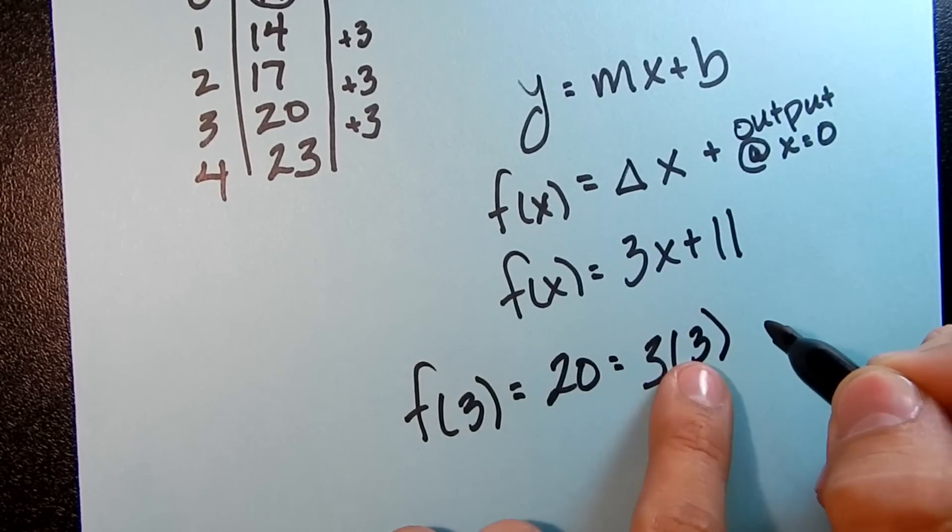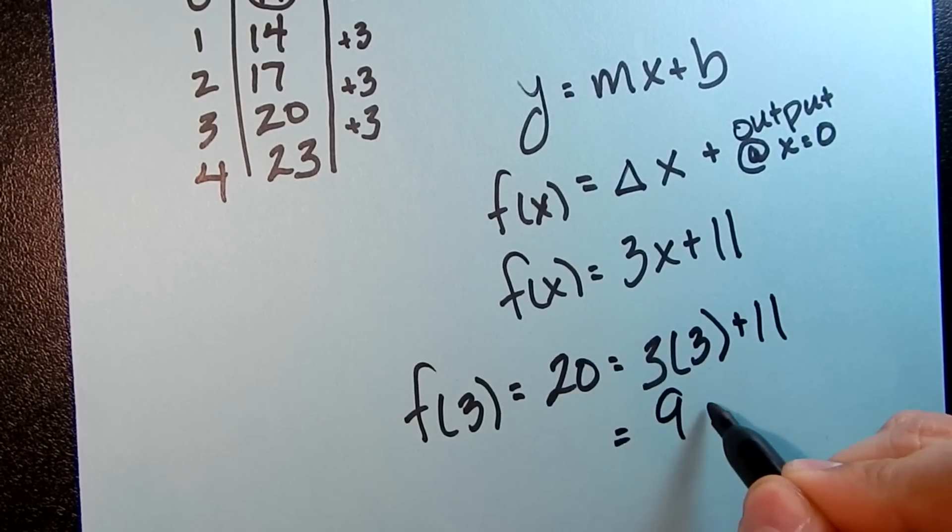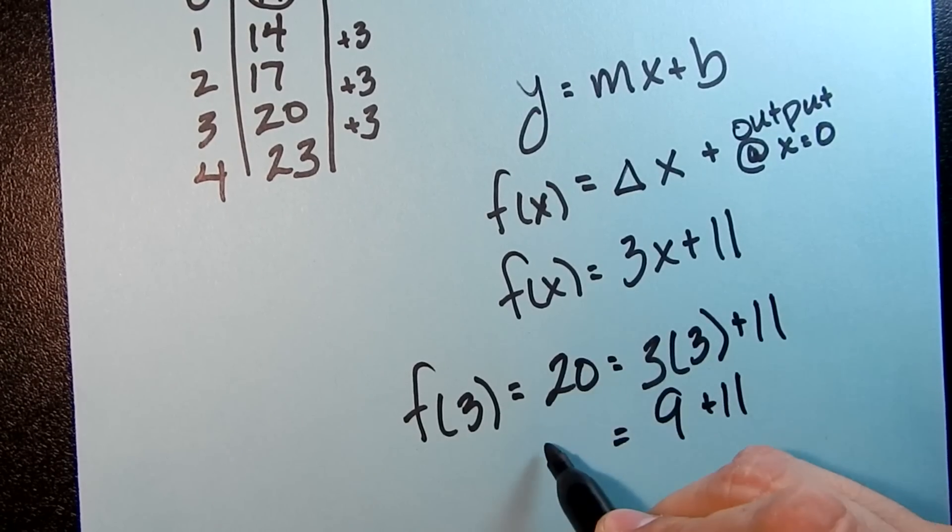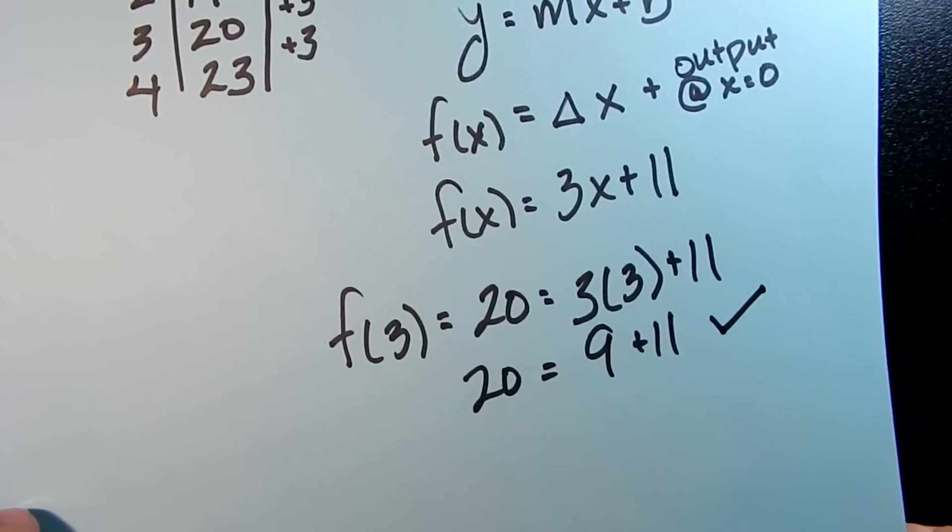It should be 3 times 3, because that's your input, plus 11. So here we have 9 plus 11, which does, in fact, equal 20. So this works. You can try as many points as you want.